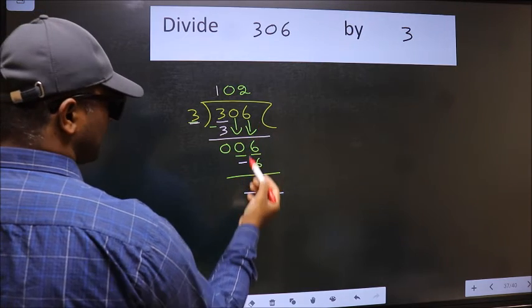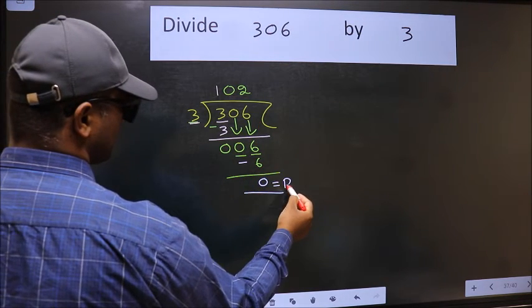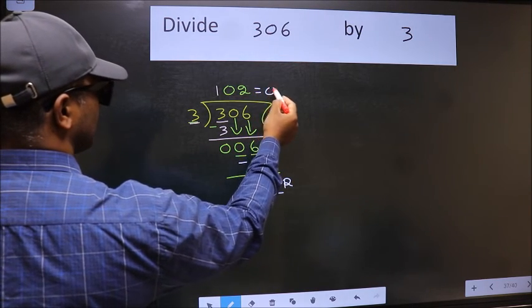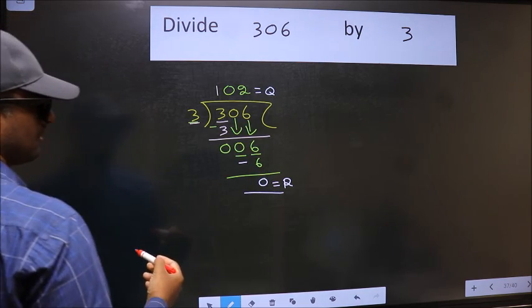No more numbers to bring it down. So this is our remainder and this is our quotient. We'll see you next time. Okay. Bye.